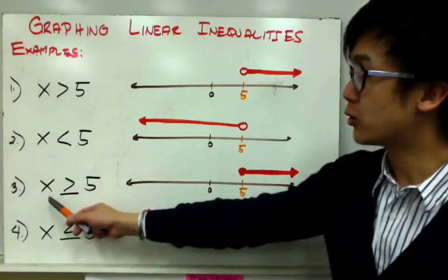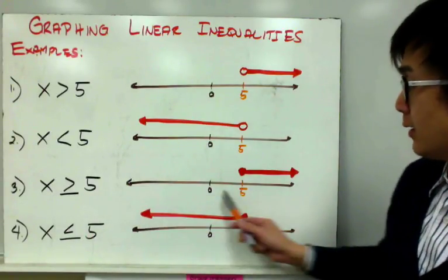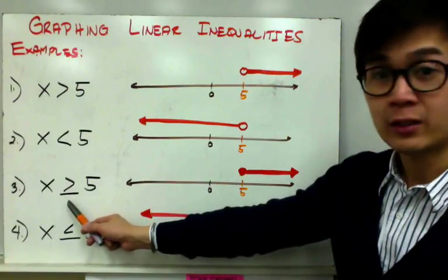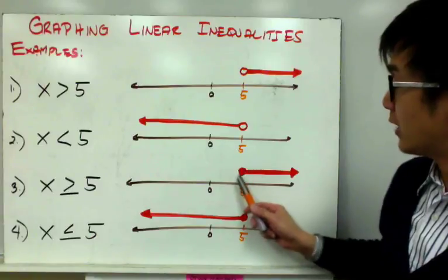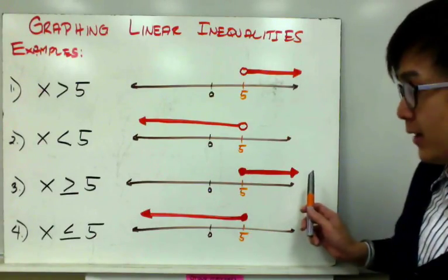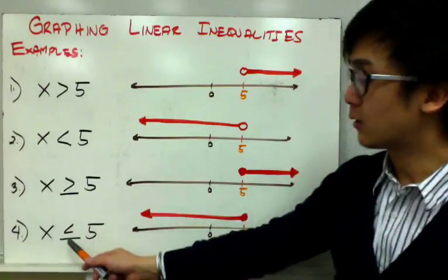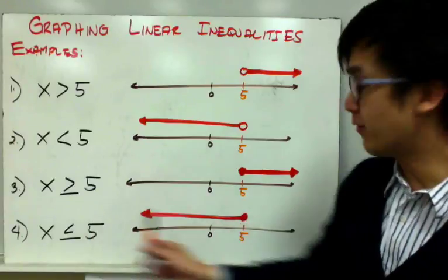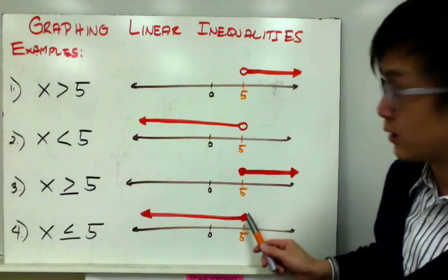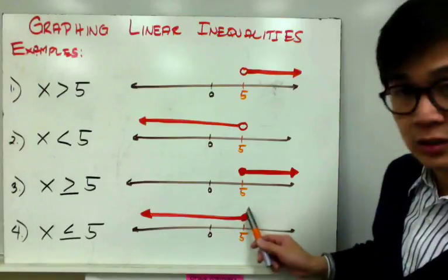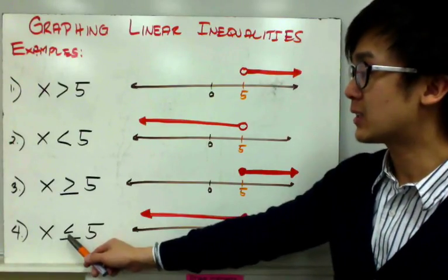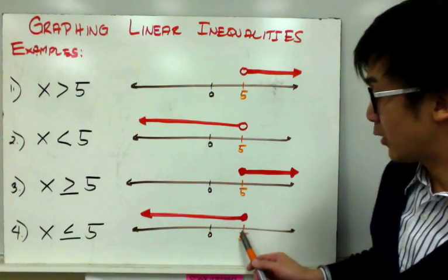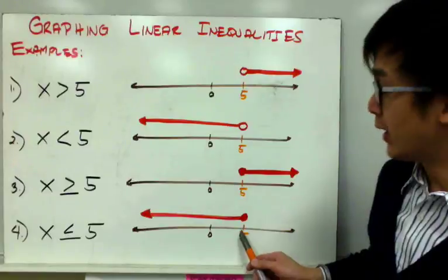To graph x greater than or equal to 5, you need your number line, 0 in the middle, and 5 is right here. Since it's the greater than or equal to symbol, I have a shaded circle going to the right. For x less than or equal to 5, my shaded region moves towards the left and my circle is now a shaded circle, denoting that 5 — your integer — is included in your inequality.